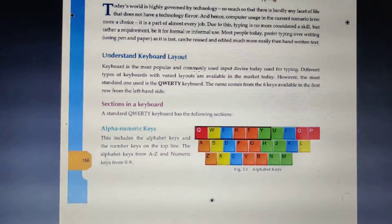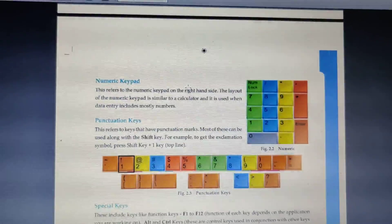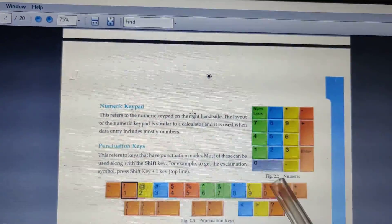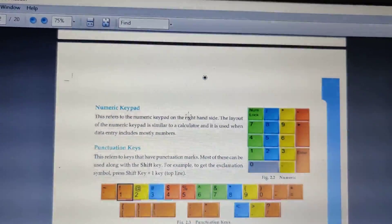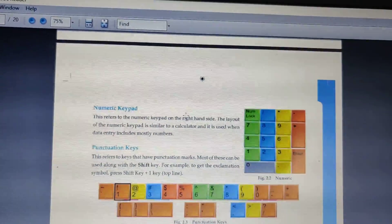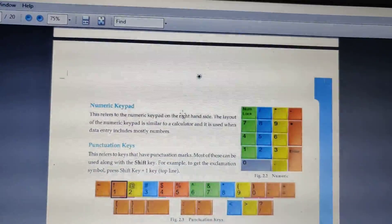Next is numeric keypad. Here is a diagram in the figure you can see. This refers to the numeric keypad on the right hand side. The layout of the numeric keypad is similar to the calculator, and it is used when data entry includes mostly numbers.